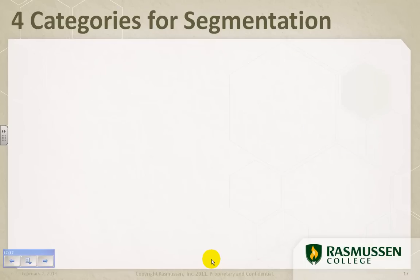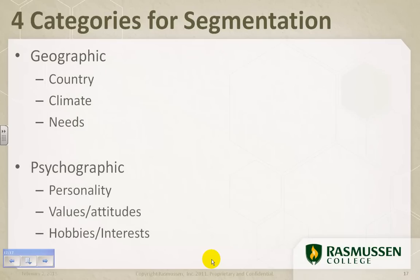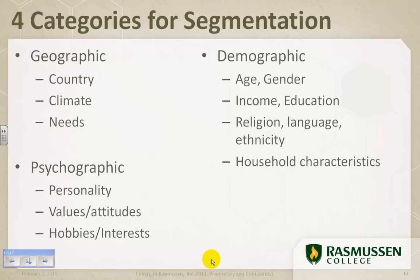The 4 categories of segmentation that I've gone over in our video today include geographic, where you're looking at location, the country, the climate, the needs of particular locations. Psychographic: psychology. What personality, values, attitudes, hobbies or interests does your segment have that will allow you to better market your products and services? Demographic. Think of census, age, gender, income, education. Don't just think race. Think of religion, language, ethnicity, household characteristics and life stage. And finally, behavioral based on purchasing behavior. What benefits is your segment purchasing? How loyal are they to your product? And what is their rate of use? Thank you for joining me today on Categories for Segmentation. I hope you enjoy the other marketing videos as well.